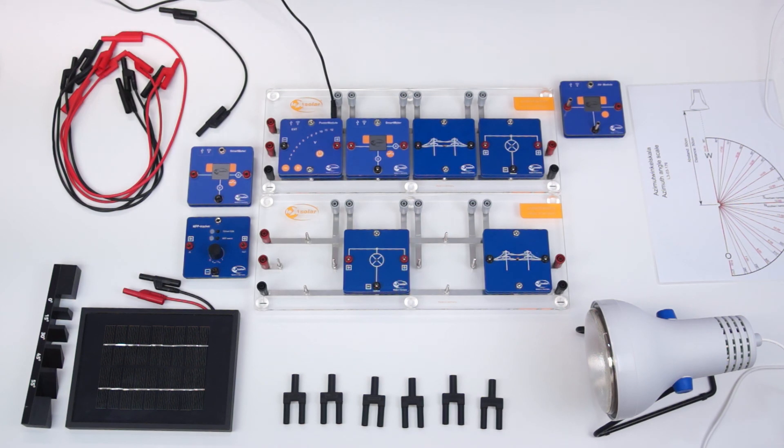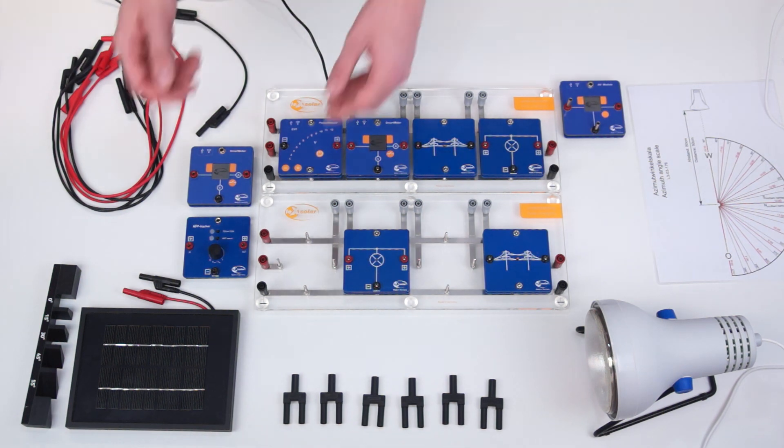To illustrate the problem of over-voltage, we will install a photovoltaic system with MPP tracker at the second house. Before the house, a power meter is connected in order to investigate when the house absorbs energy from the strand or delivers it. For this purpose, we put the solar module in the base.